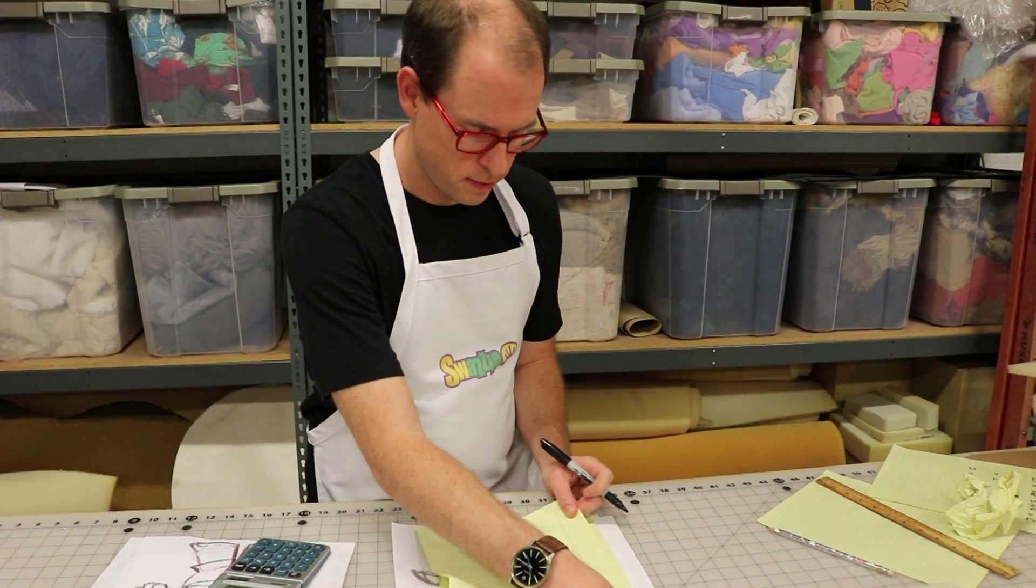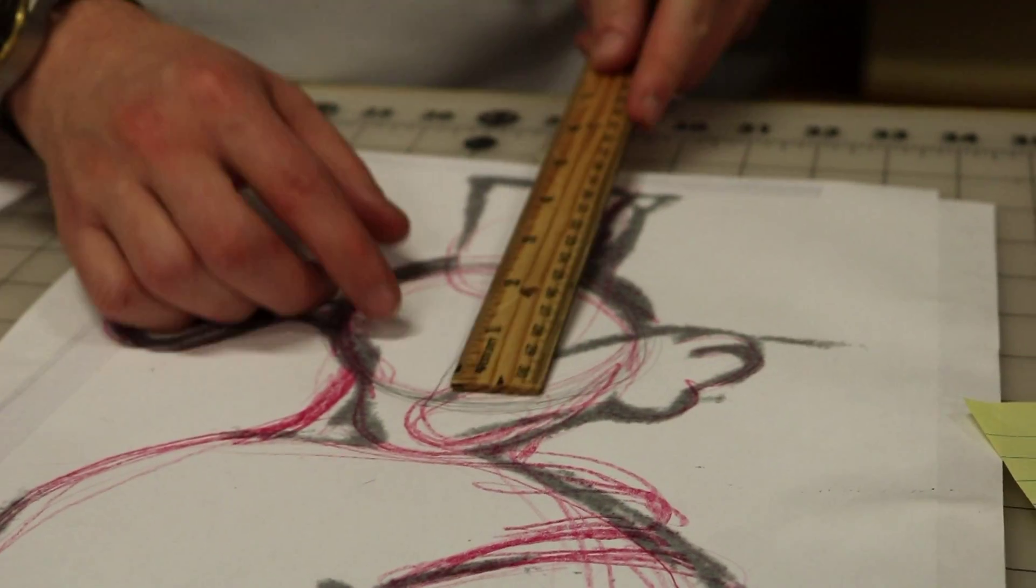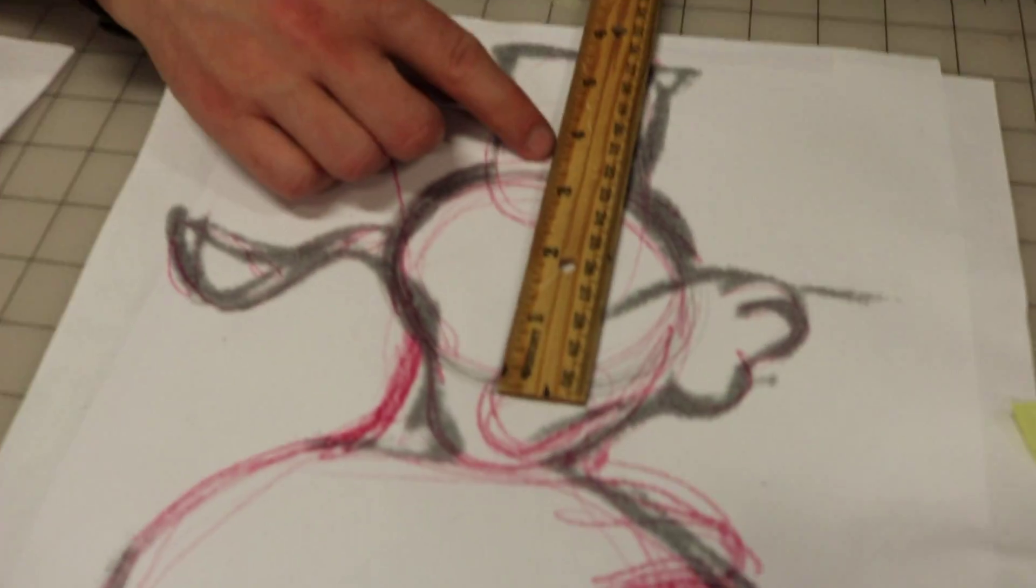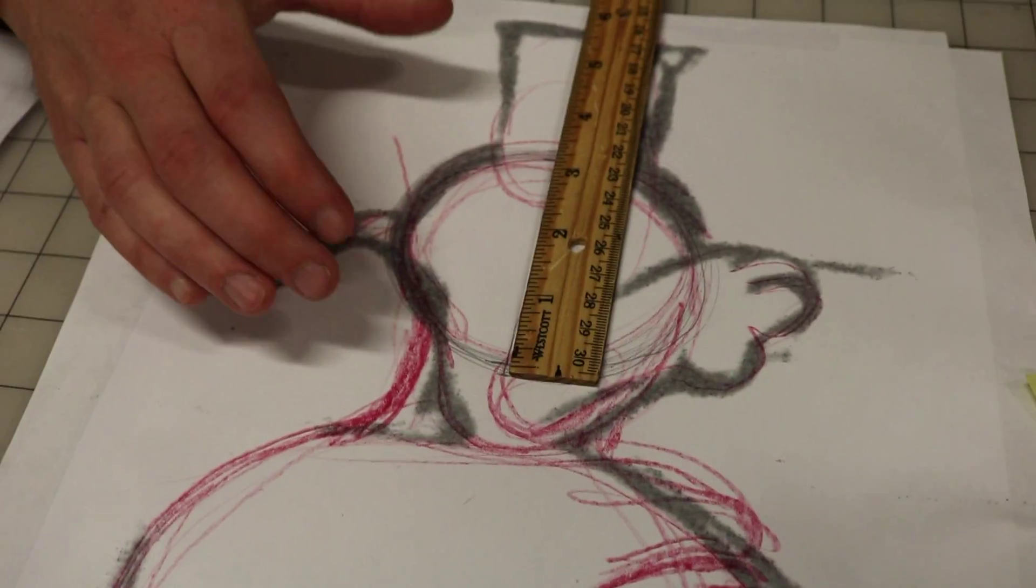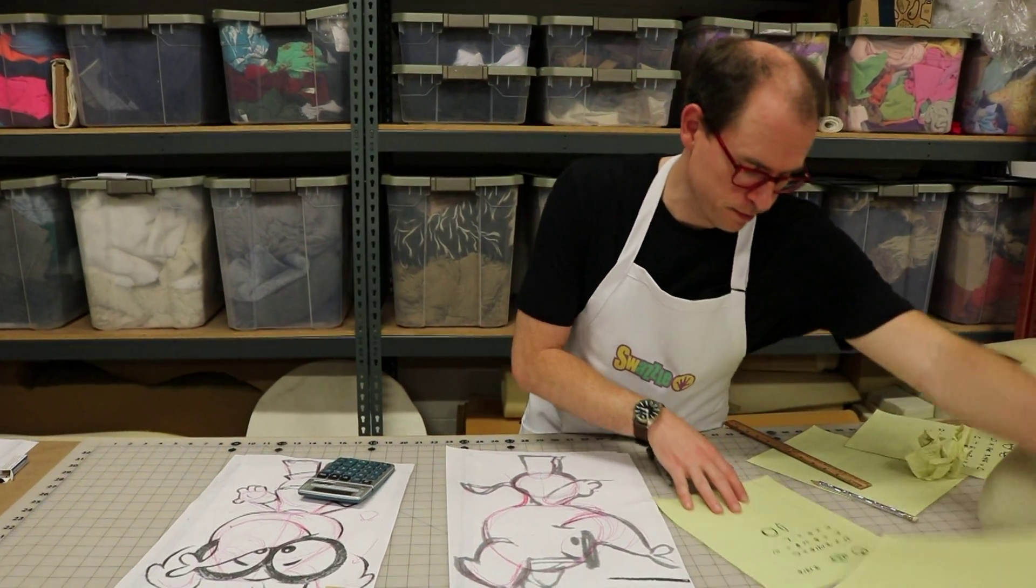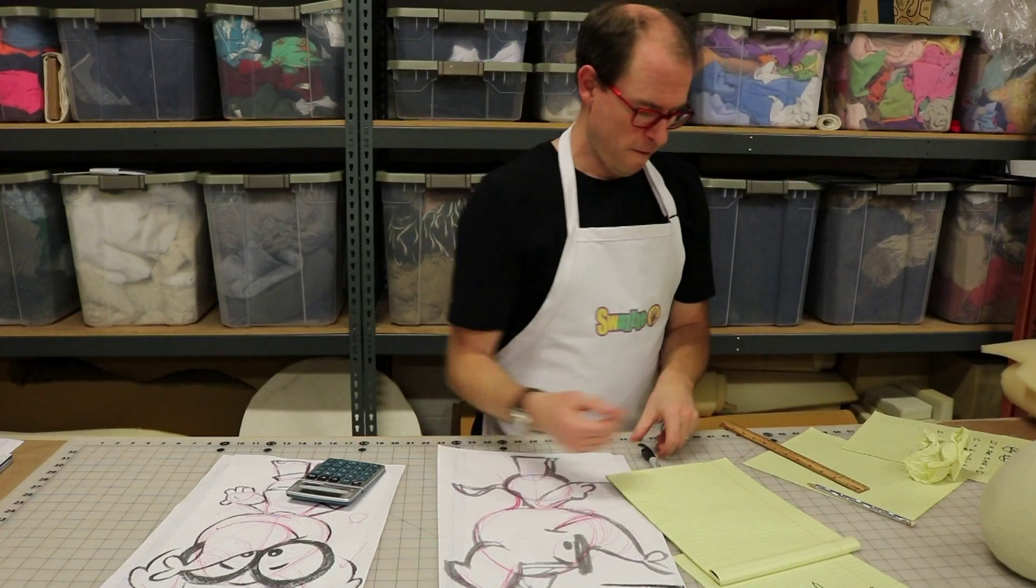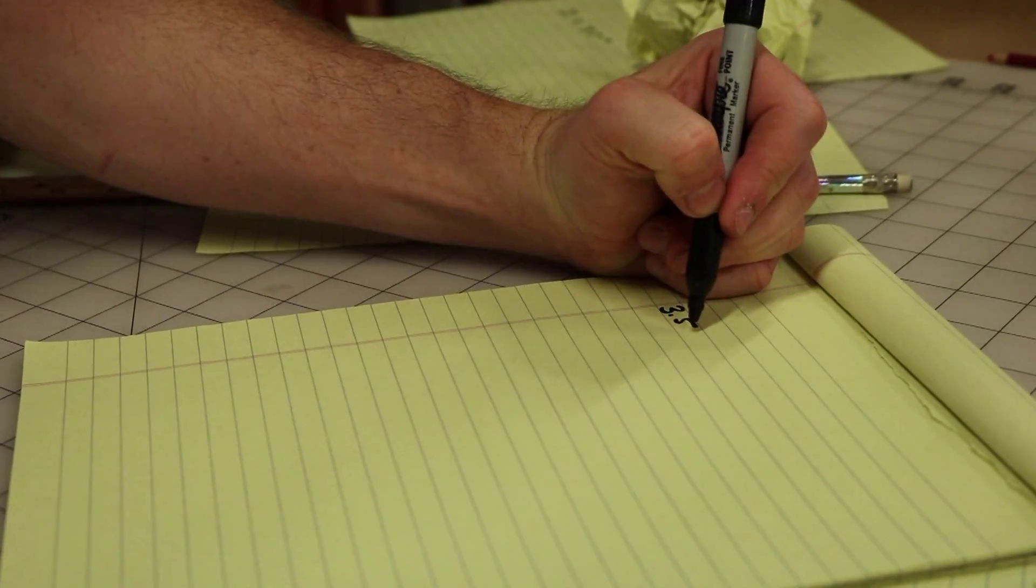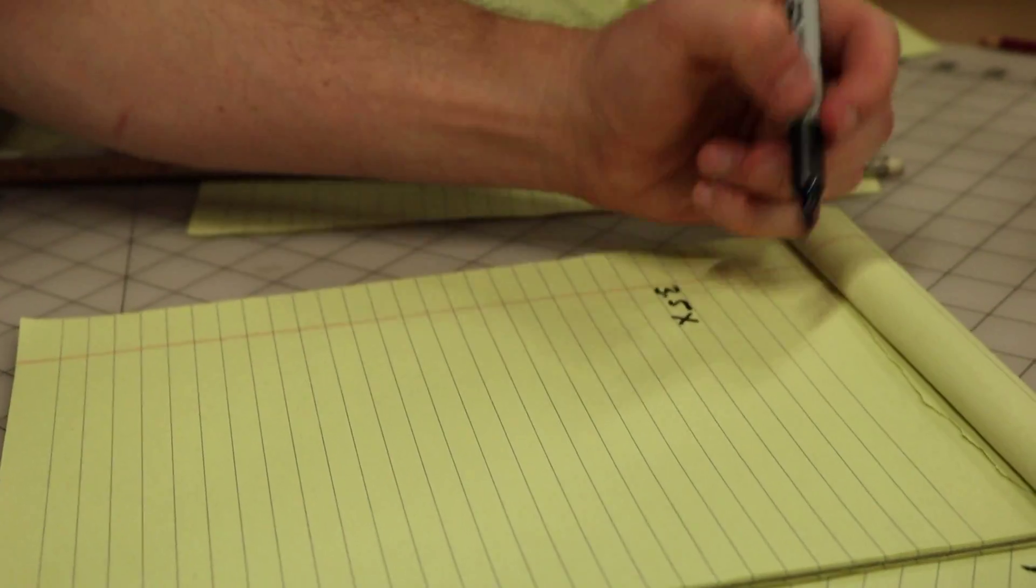So the first thing we need to know is what is our diameter? And the way we get our diameter is by returning to our puppet design. I'm going to err on the larger side. I'm going to call it 3.5 inches. That's our diameter. So using our formula here we make our diameter 3.5 inches. And then we're going to times that by pi.